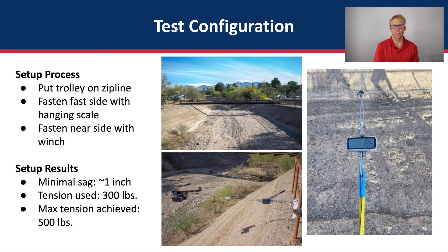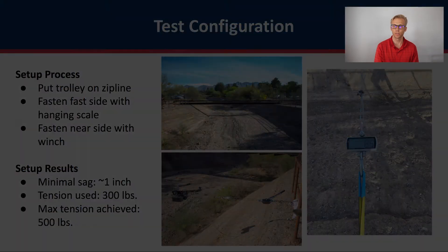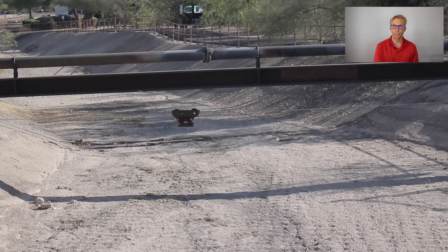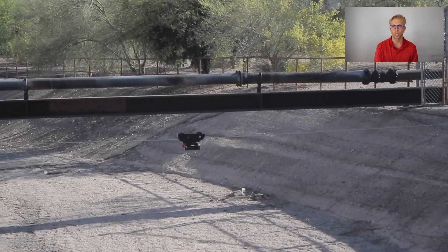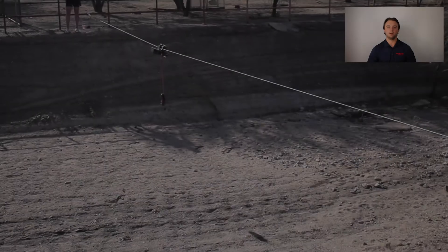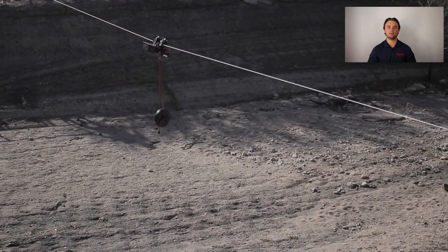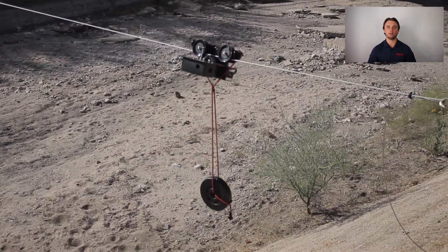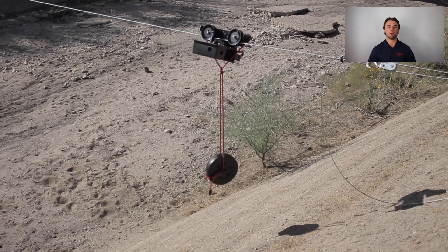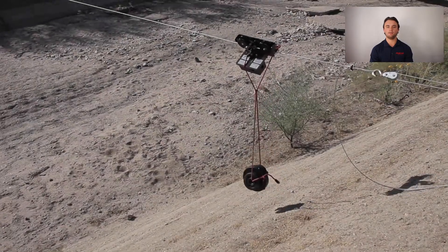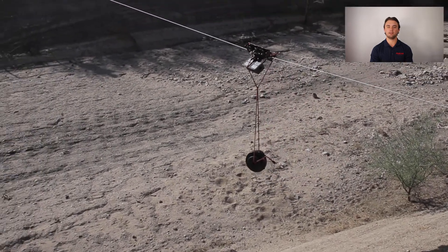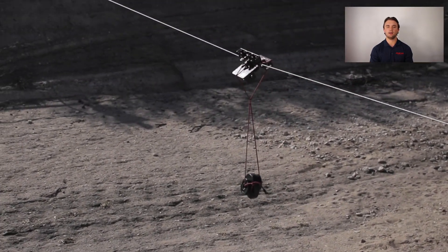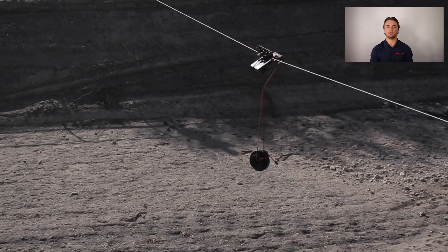To properly test the zipline design, this setup was constructed at the Ryuto River. A hanging scale was used to measure tension in the line, which was controlled using a mechanical winch. The zipline had minimal sag of less than an inch. The powered trolley demonstrated precise movement and can accelerate quickly to various speeds via remote control, using self-braking to stop. One test was performed with a 7.5-pound hanging mass loaded off-center to test off-nominal scenarios; the trolley operated normally. However, with a 12.5-pound payload, the driver's tire did not have sufficient normal force to grip the zipline, and the trolley got stuck.